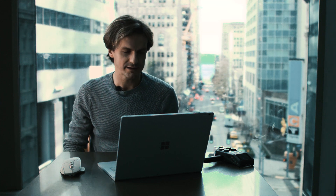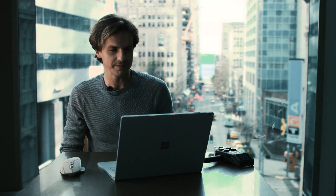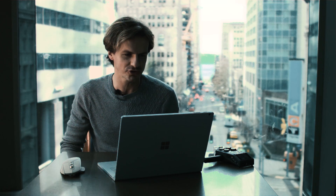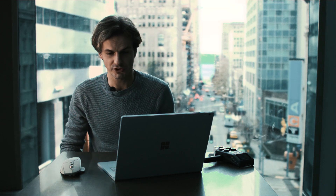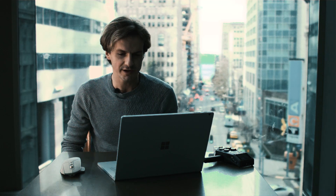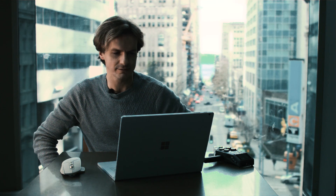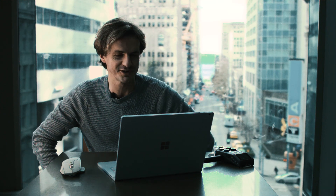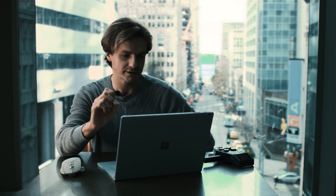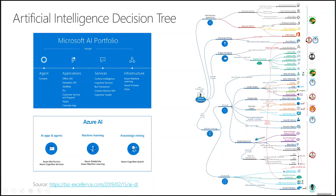Let's discuss the artificial intelligence decision tree. This is a second version of the decision tree dedicated to machine learning technologies. In this case we are covering a broader topic which includes artificial intelligence agents and applications. That's why we call it the artificial intelligence decision tree, and this was influenced by Microsoft messaging.